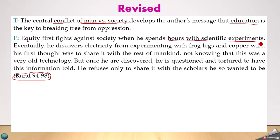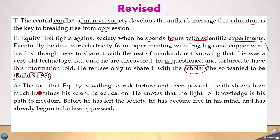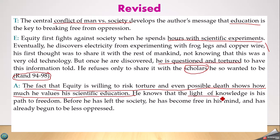The revised paragraph focuses on how Equality fights oppression by spending hours on scientific experiments. Once he's discovered, he's questioned and tortured. The analysis states: 'The fact that Equality is willing to risk torture and even possible death shows how much he values his scientific education.' This is a very important piece of the conflict. He knows that the light of knowledge — education — is his path to freedom, freedom from oppression. Now everything connects.